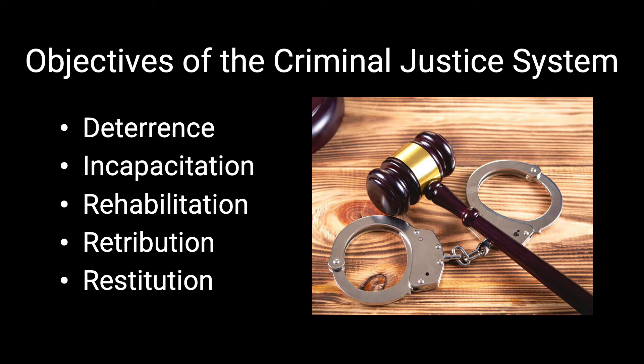Deterrence has two different types, specific and general, which I will explain later in this presentation. Incapacitation is when the offender is removed from the public and society and placed in jails, prisons, house arrests, etc. Rehabilitation attempts to alter the offender's behavior in order to prevent them from committing future crimes. Fourth is retribution, which is also known as punishment, and is when the offender is disciplined based on their crime committed. Finally, restitution is when the offender is ordered by the court to pay victims fully or partially for any type of damage that they may have suffered from the crime.